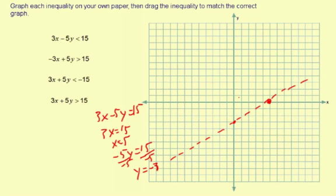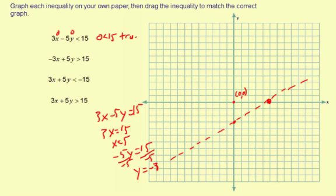Now we're going to do a test point to determine whether to shade above or below the line. I like to pick (0, 0) because it's easy to work with. The idea is: if this one point in this half-plane is a solution, then all the points in this half are solutions; if not, the other side contains the solutions. Substitute 0 for x and 0 for y: 3 times 0 minus 5 times 0, so 0 is less than 15. That is true, which means all the points on this side with (0, 0) make it true, so you shade this entire side.